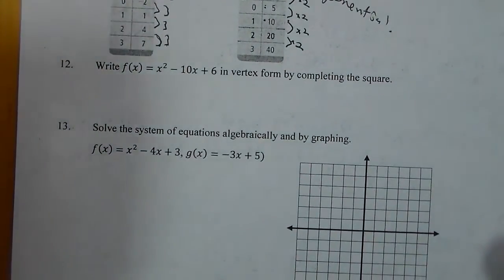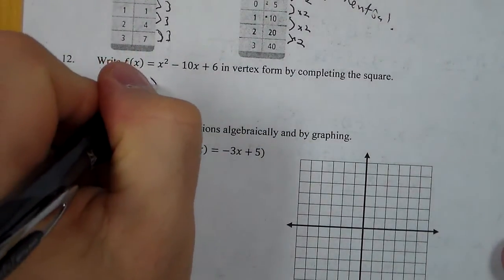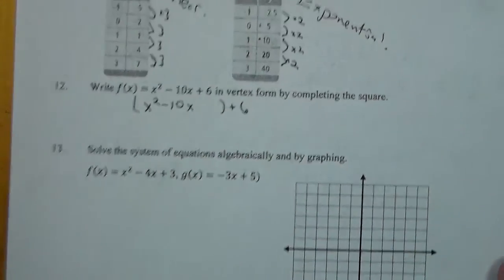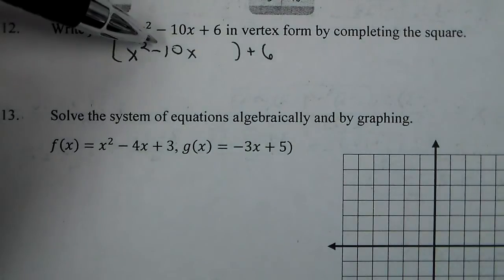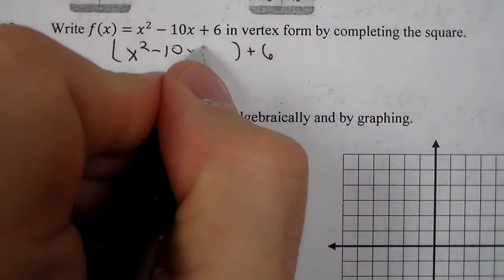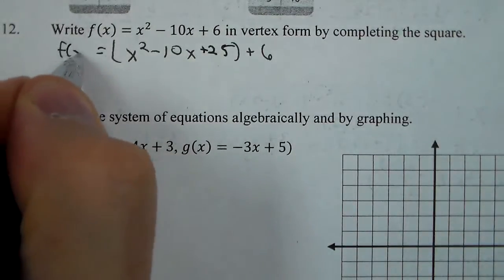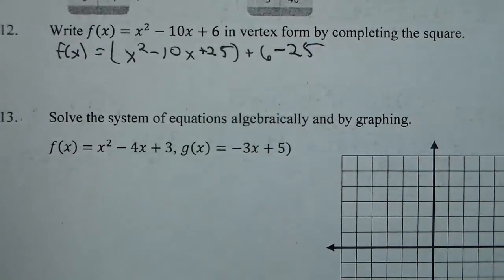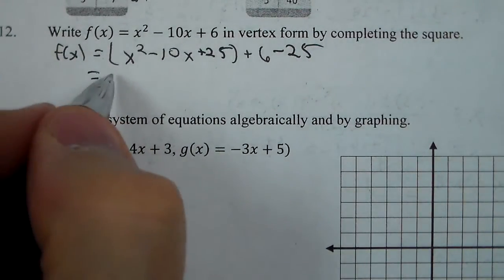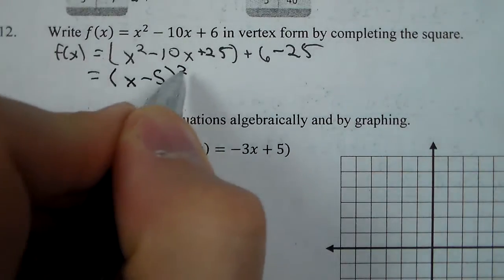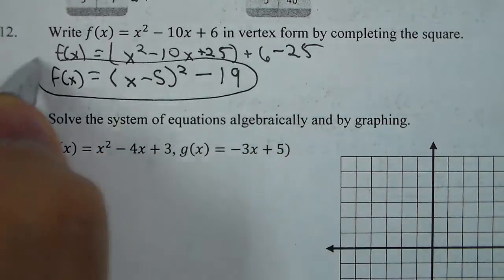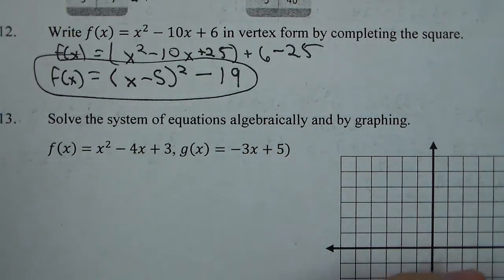For number 12, we need to write it in vertex form by completing the square. I'm going to take x squared minus 10x and complete the square. I'll take half of negative 10, squared, which is 25. Now I'm not going to add it to the other side — instead I add it and subtract it from the same side, so it nets out to 0. This turns the expression into x minus 5 quantity squared minus 19, and now it's in vertex form. The process: complete the square, but add and subtract from the same side.